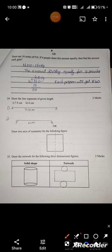There are 16 notes of rupees 10. If 4 people share this amount equally, then find the amount each gets. 16 notes into 10 rupees equals 160 rupees. Divide by 4 people: 4 fours are 16, each person will get 40 rupees.